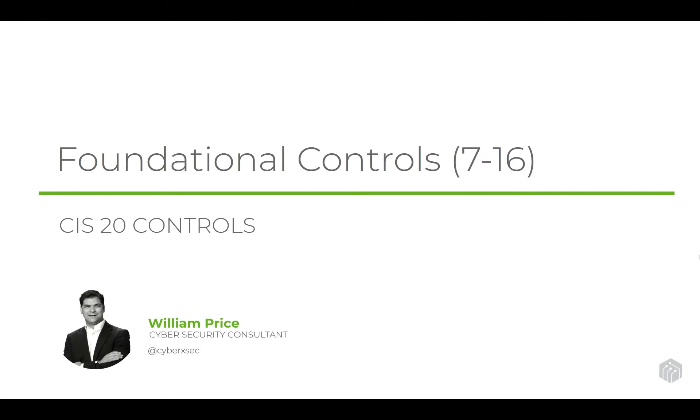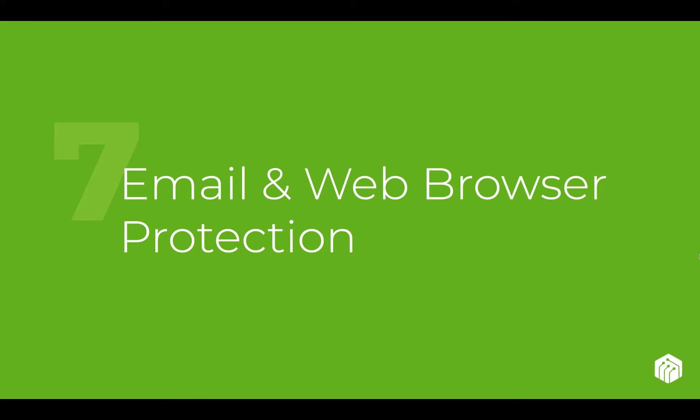The foundational controls, seven through 16, are the group of controls we're going to look at next. If you have not implemented the basic controls, do those before moving on to foundational. The first control under the foundational section is email and web browser protection. As we have been working on version 8 of the CIS 20 controls, some of the wording will change slightly, but the point and what they're trying to achieve will remain the same.